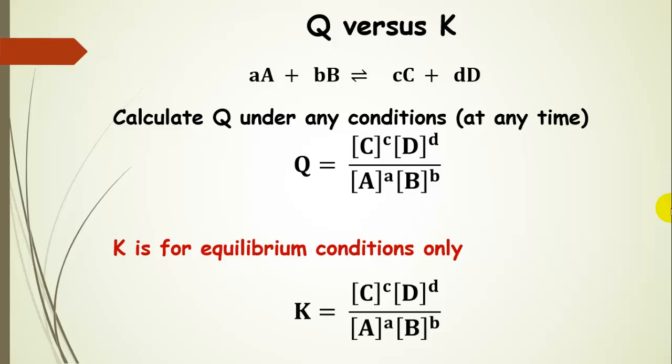So this is just a summary of that idea. We can calculate Q any time we want, and we're going to compare that value to the value for K, which is under equilibrium conditions only.